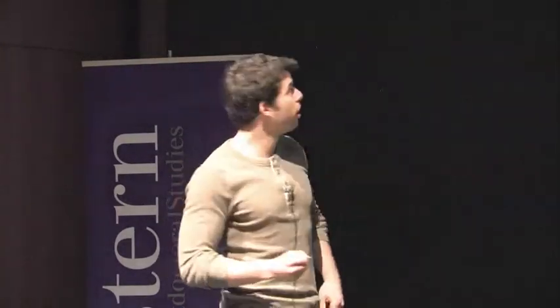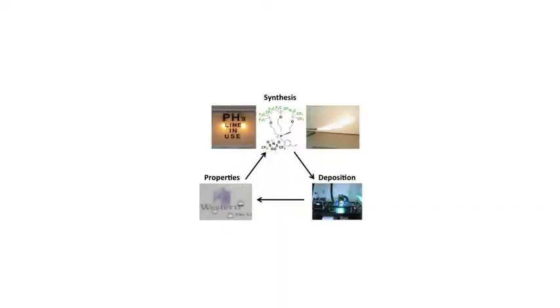We can look at this chemical structure just like an architect looks at their blueprints — everything has a purpose. The green components impart the water repellent properties that I'm interested in. The black component acts as a scaffold holding everything together. And the blue component acts as the glue. And this leads me to the next step: deposition.